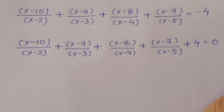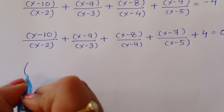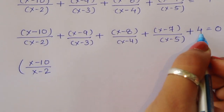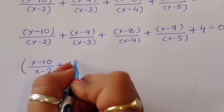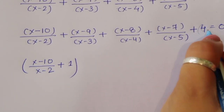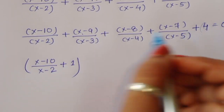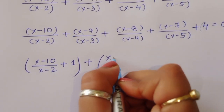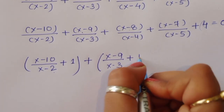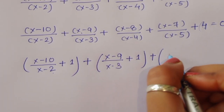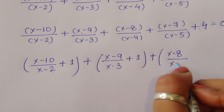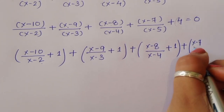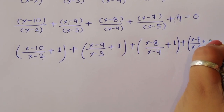Now we distribute the plus 4 as four separate plus 1 terms — one added to each fraction. So we write: (x minus 10)/(x minus 2) plus 1, plus (x minus 9)/(x minus 3) plus 1, plus (x minus 8)/(x minus 4) plus 1, plus (x minus 7)/(x minus 5) plus 1, equals 0.